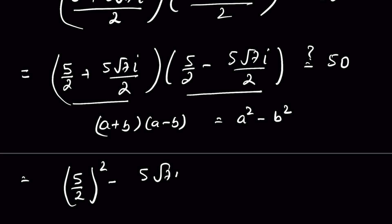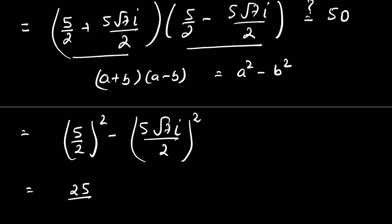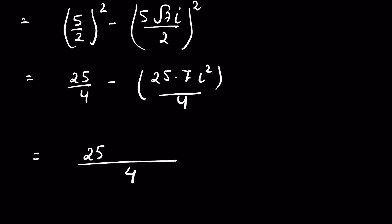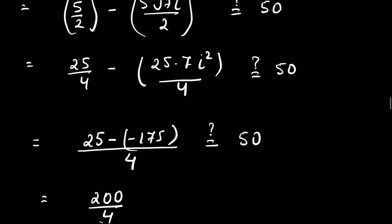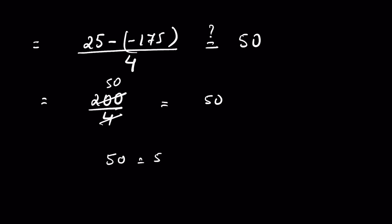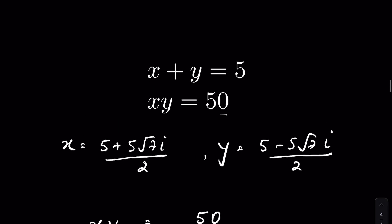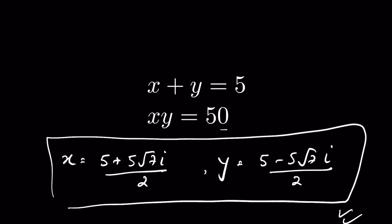This gives 25 over 4 minus (25 times 7 times i squared) over 4. Since i squared is negative one, the minus i squared becomes positive, so we have 25 plus 175 over 4, which is 200 over 4, equal to 50. So LHS equals RHS, confirming the answer is correct. How did you solve it? Let me know in the comment section. Thanks for watching.